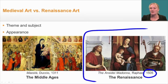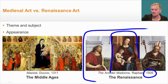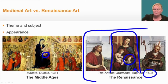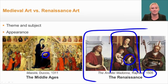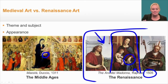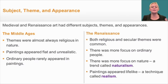Moving over to the Renaissance, 200 years later, you still have the Virgin Mary holding the baby Jesus, but look — she looks feminine, you can see the folds in her clothing, her hands look like real human hands. The baby Jesus looks like a real baby; you can even see the little folds in his arms and legs. The artist has incorporated a natural background, and the people around Mary are the same size as her. Medieval and Renaissance art had different subjects, themes, and appearances.